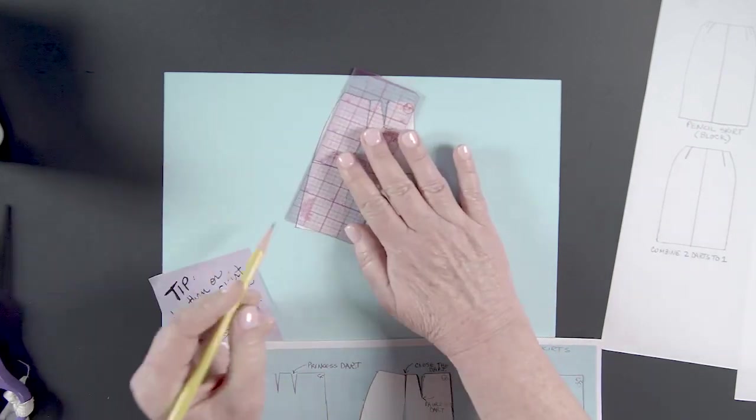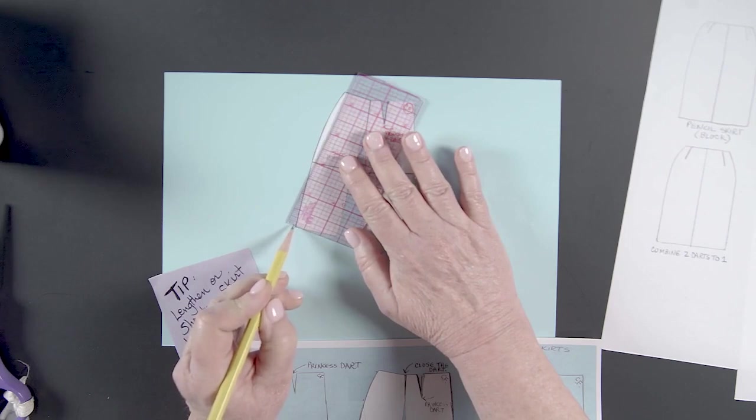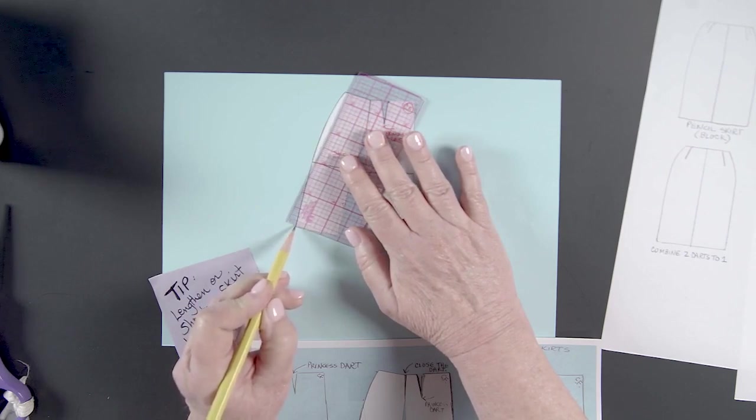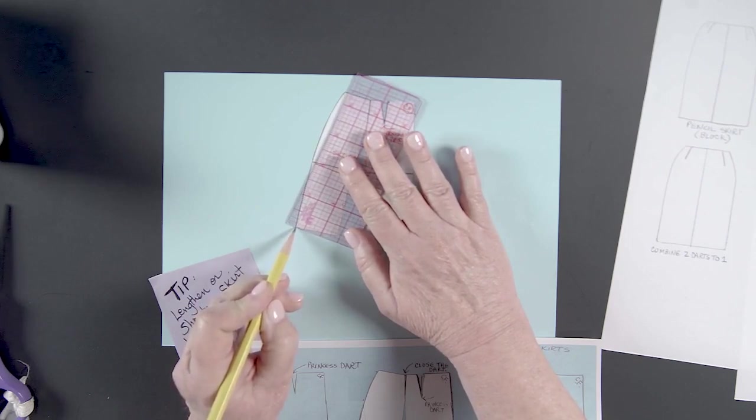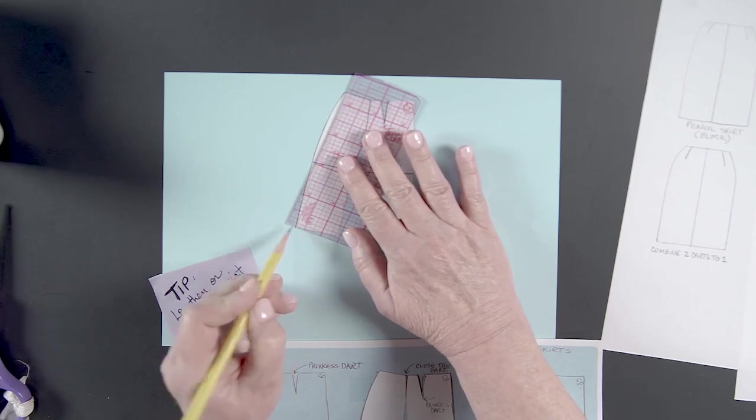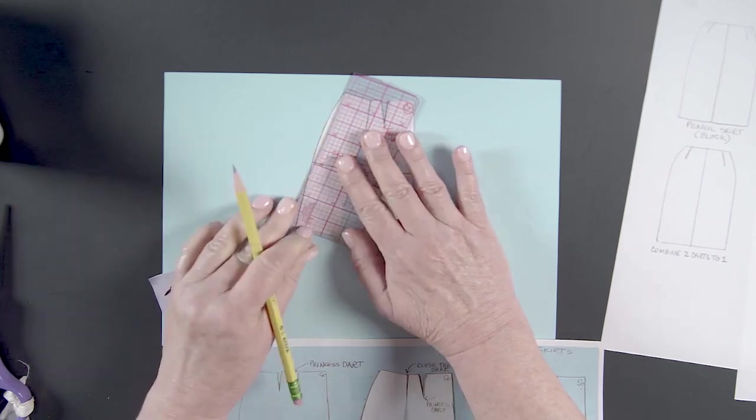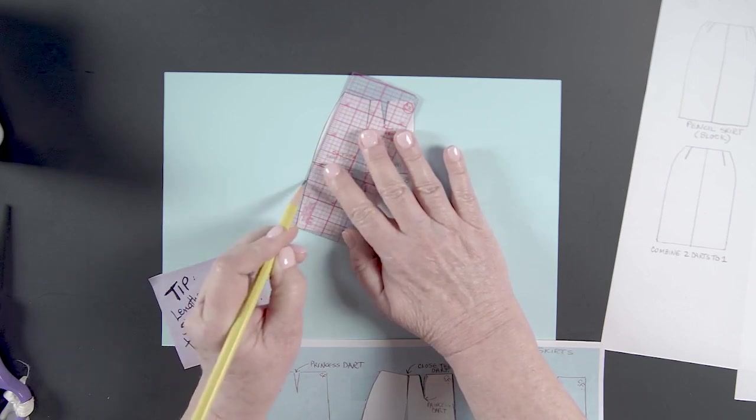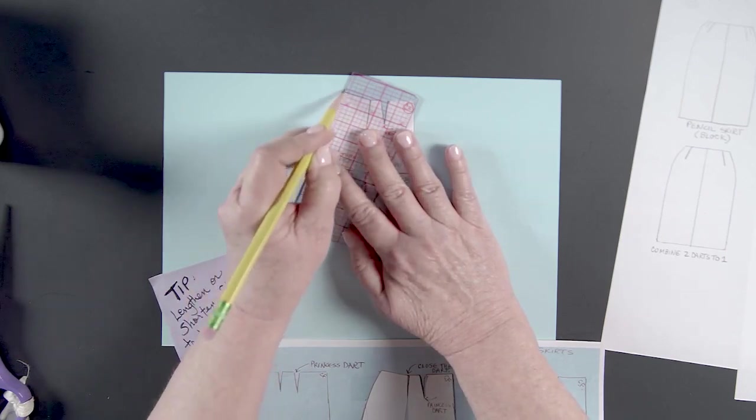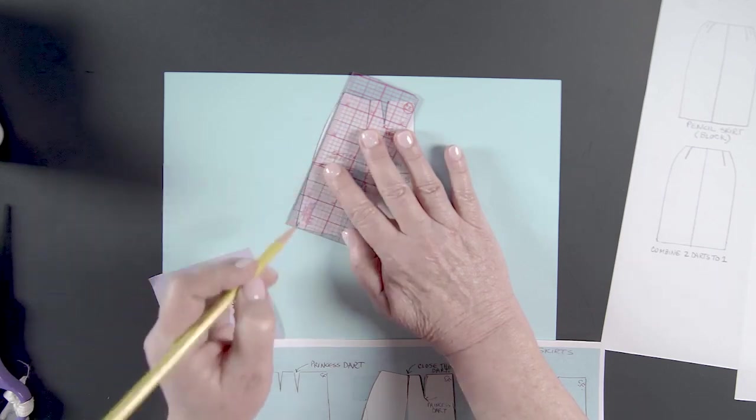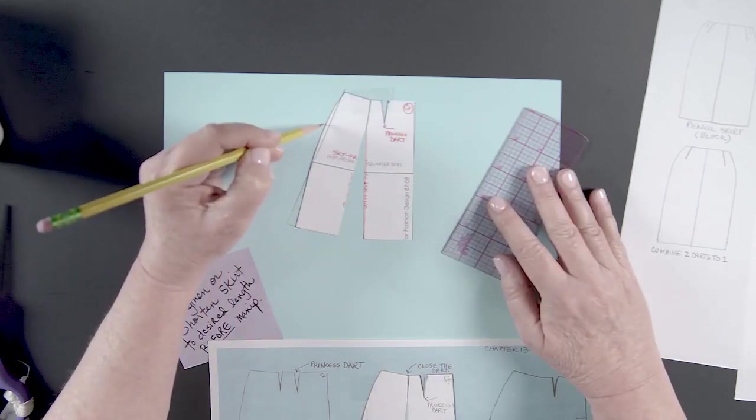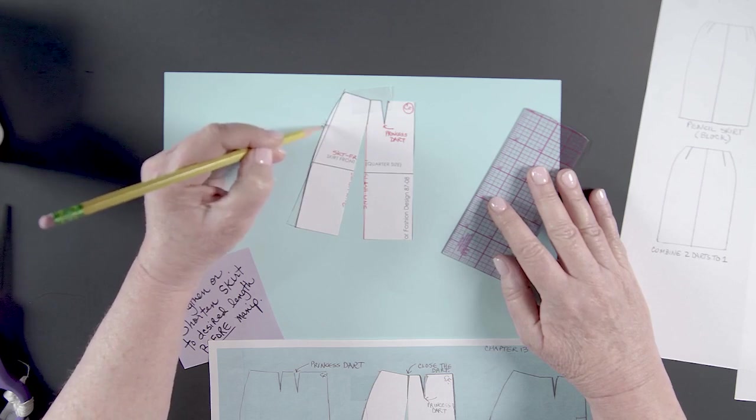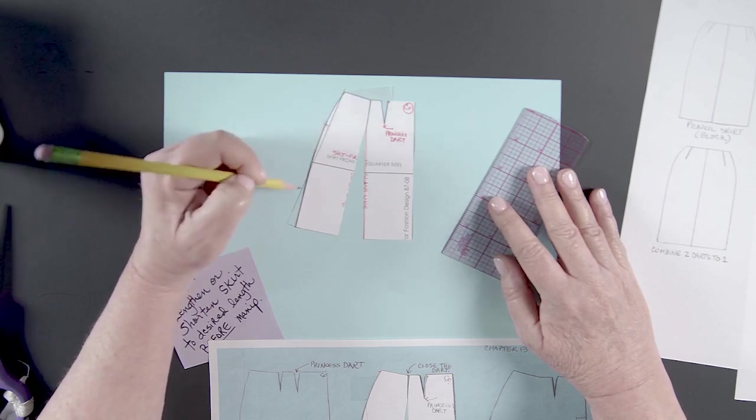So what we want to do is take our ruler. We're just going to extend this out just a little bit. I'm going to extend it out a quarter of an inch. So I'm putting my ruler right here at the quarter inch mark. And then I'm going to direct this up to the waist. Now the side seam is a straight line.